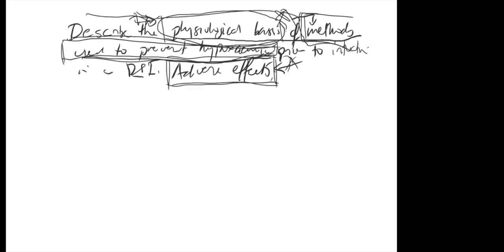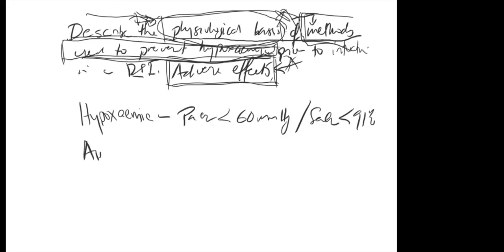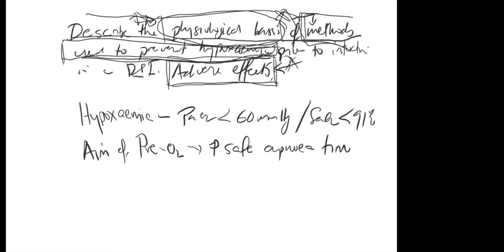Start with a nice easy definition: what is hypoxemia? PaO2 less than or equal to 60 mmHg. The second thing: what's the aim of pre-oxygenation? To increase your safe apnea time. So we're looking at increasing O2 stores — primarily the FRC.